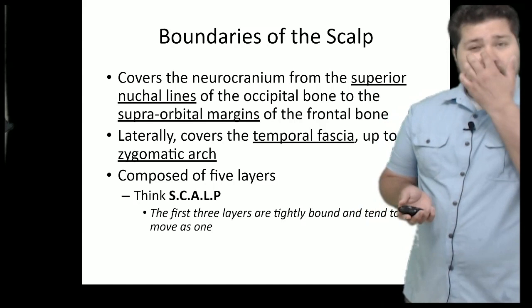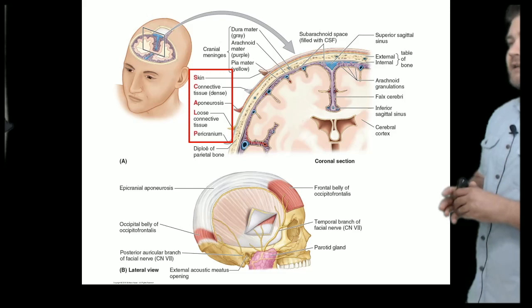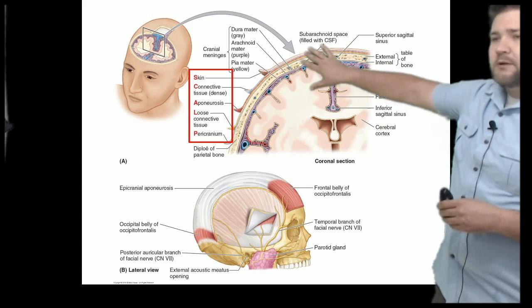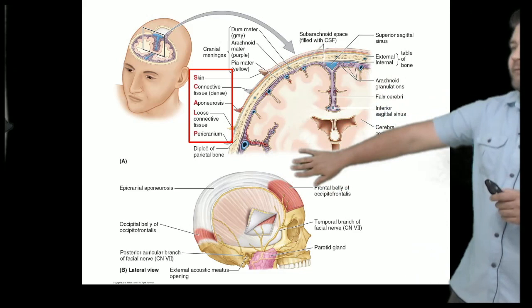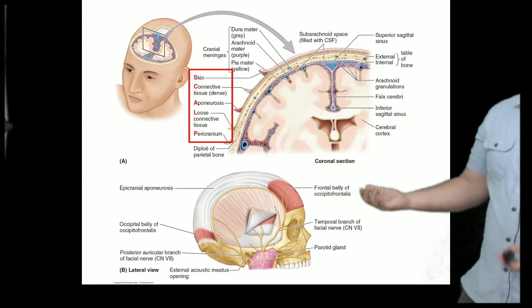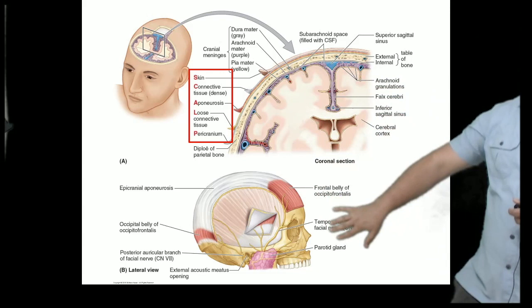The scalp is the overlying skin and connective tissue over our skull, and it has a really easy acronym to remember: SCALP. S is skin — the top layer. C is dense connective tissue, not to be confused with loose connective tissue later. A is the aponeurosis from our occipitofrontalis muscle. L is loose connective tissue, essentially fatty tissue. And P is the pericranium — the outer portion of our skull.